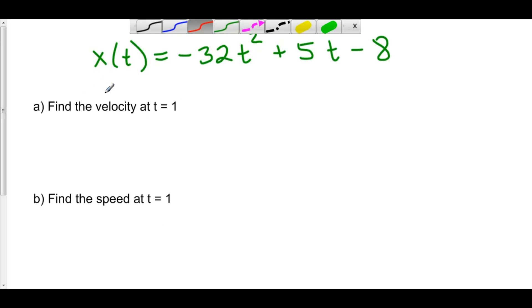Well velocity is the derivative of position. So, our velocity function is given by negative 64t plus 5, which means that the velocity at time t equals 1, plug 1 into here, we get negative 64 plus 5 is negative 59.